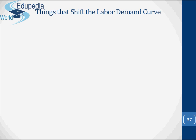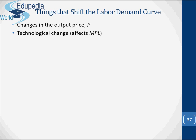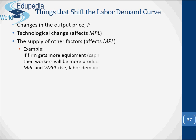Things that shift the labor demand curve include: changes in the output price (P), technological change, and the supply of other factors. For example, if firms get more equipment (capital), workers will be more productive — MPL and VMPL rise, and labor demand shifts upward. The remaining portion of this section will be explained in the next video.